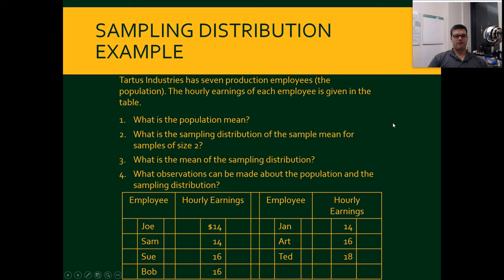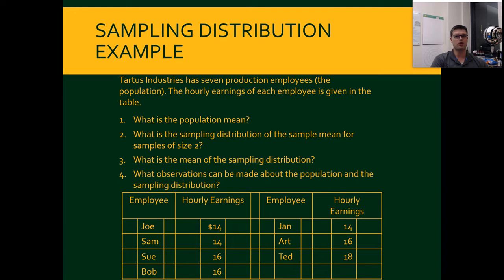So for instance, Tardis Industries has seven production employees — the population. When I say they have seven production employees, that's the entire population of production employees. They might have more than seven employees total, but that is the population of the production employees.